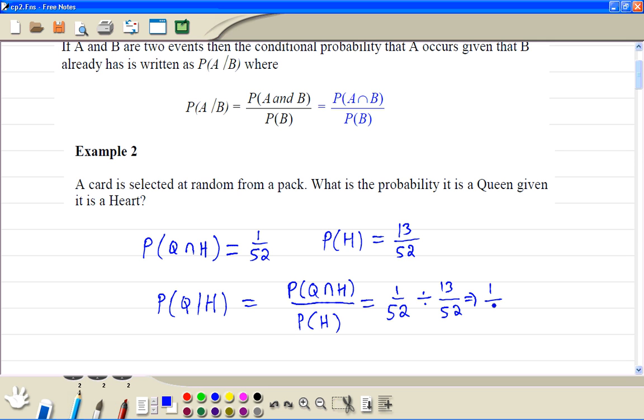So it's 1 out of 52 times 52 over 13. So we get the answer 1 out of 13.